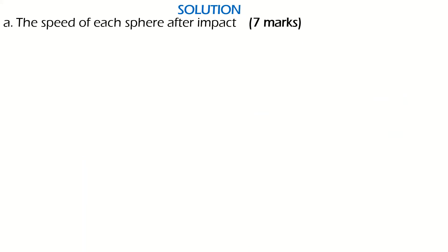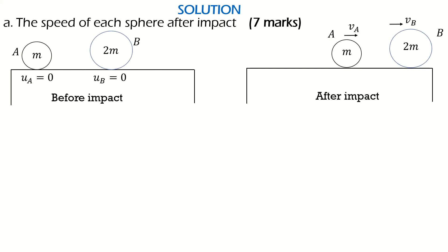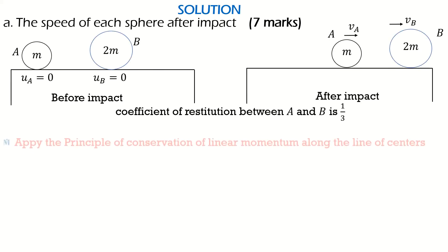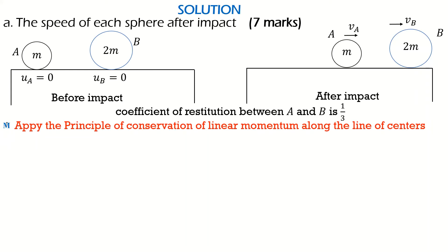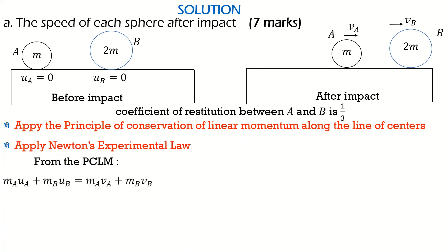Part A asks us to find the speed of each sphere after impact, allocated seven marks. There are two important laws we will use: the principle of conservation of linear momentum along the line of centers, and Newton's experimental law. From the principle of conservation of linear momentum, the sum of momentum before impact equals the sum of momentum after impact. Momentum is mass times velocity — for A and B before impact, and for A and B after impact using final velocities VA and VB.